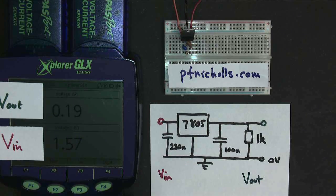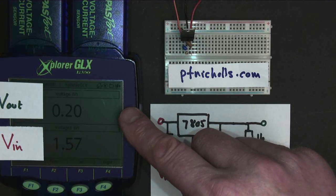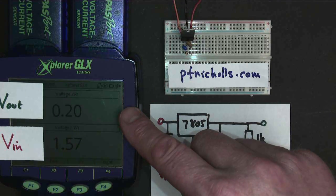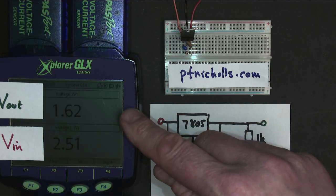There you go. When I got to 1.5 volts, 1.4 volts, then the voltage regulator started providing an output voltage. I keep going up, and as the input voltage rises, the output voltage rises with it.